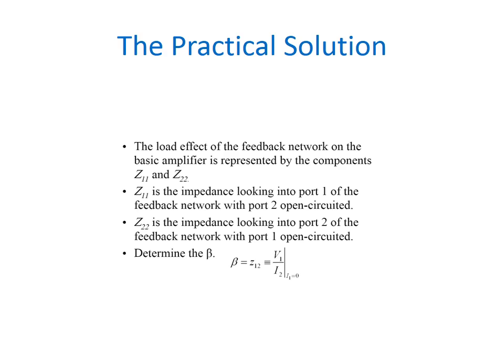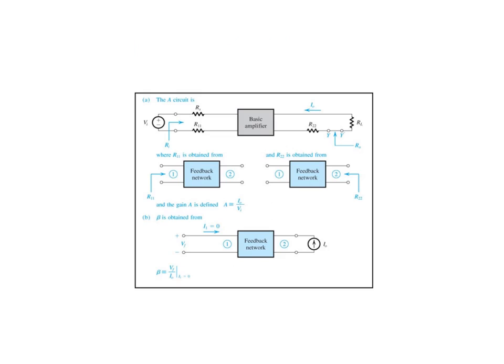Now, we are going to determine the beta value Z12 which is equal to V1 by I2 by considering I1 equal to 0. Here from the A circuit, we are going to calculate gain value that is I0 by I0 by considering I1 equal to 0.